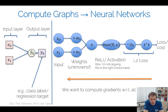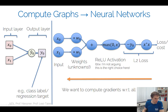Especially in the last lecture, we made the connection between compute graphs and neural networks. We have nodes in the compute graph where each node is an abstraction for a compute operation — like a multiplication with a weight, an addition, an activation function, or a loss function. We also discussed a lot about loss functions: on the left-hand side we see computing the loss between predictions ŷ₀ and y₀, which could be a regression or classification loss.